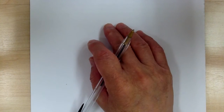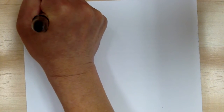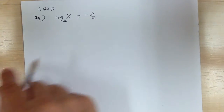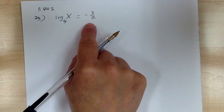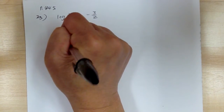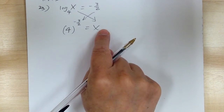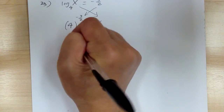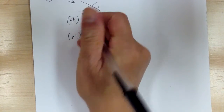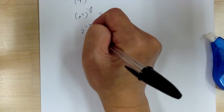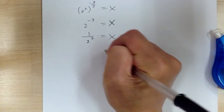Let's go to number 23. You have log base 4 of x equals negative 3 over 2. Change form: 4 to the negative 3 over 2 power equals x. Crisscross the numbers. All you have to do is evaluate this part — change 4 into 2 squared, and multiply to get 2 to the negative 3 power equals x. Flip this over: 1 over 2 to the 3 power equals x. So x equals 1 over 8.